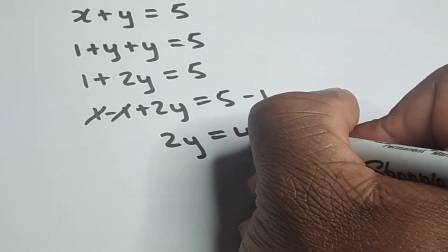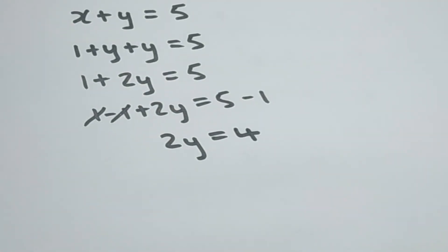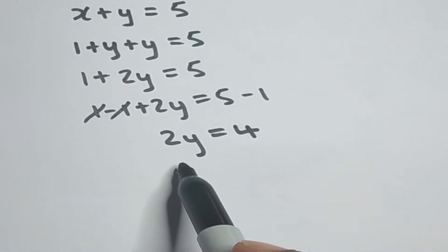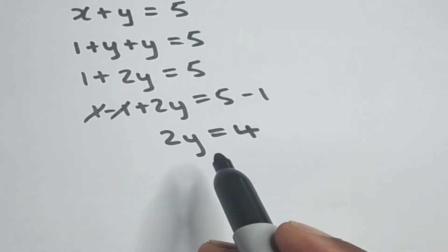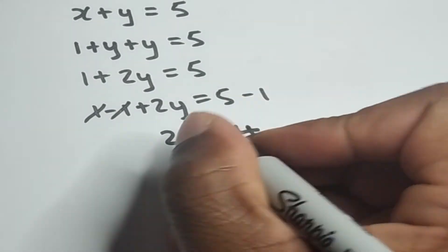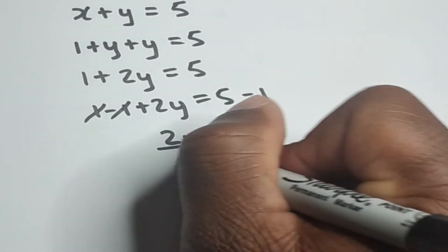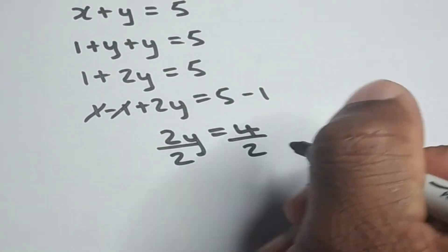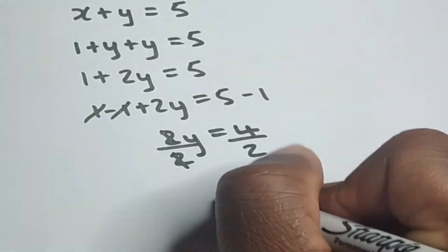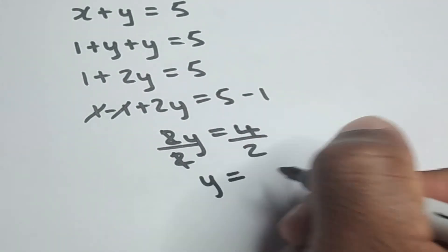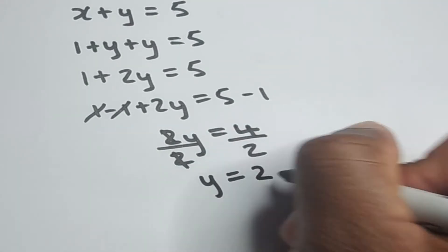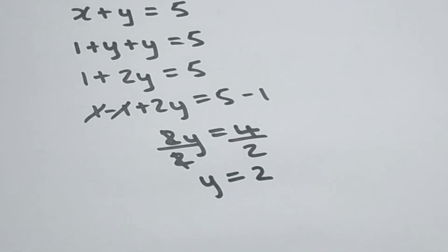Two y is equal to four. To obtain the value of y we simply divide both sides by two. Two cancels two, and we're left with y is equal to four divided by two, which is two. So therefore the value of y is two.